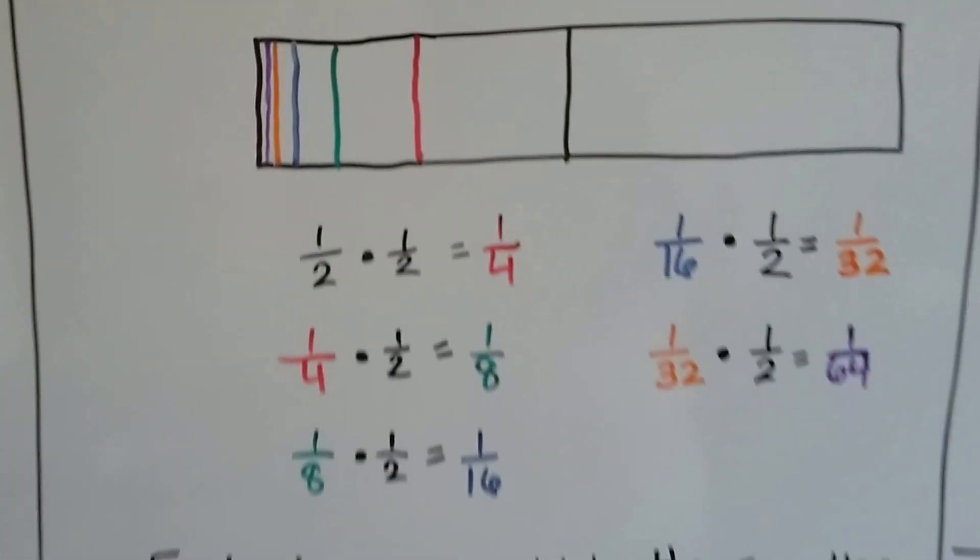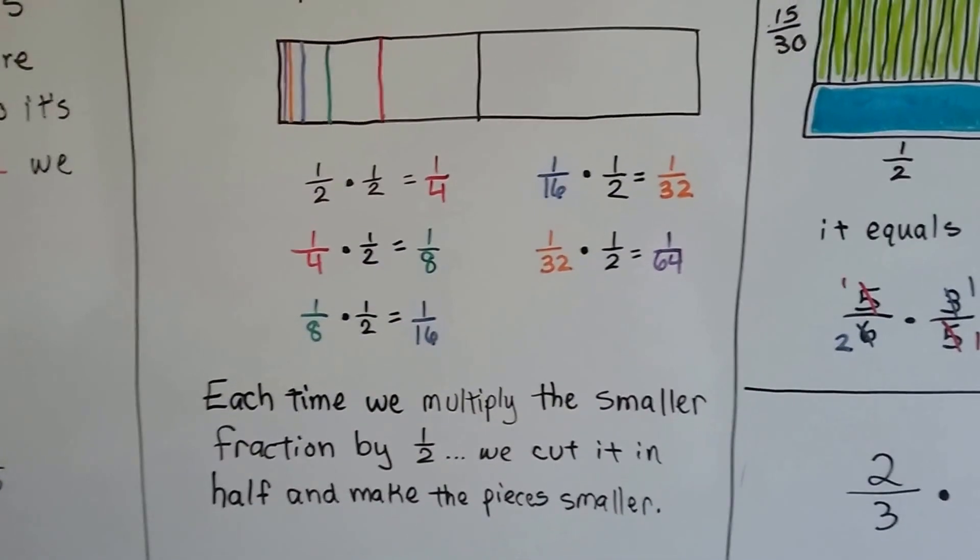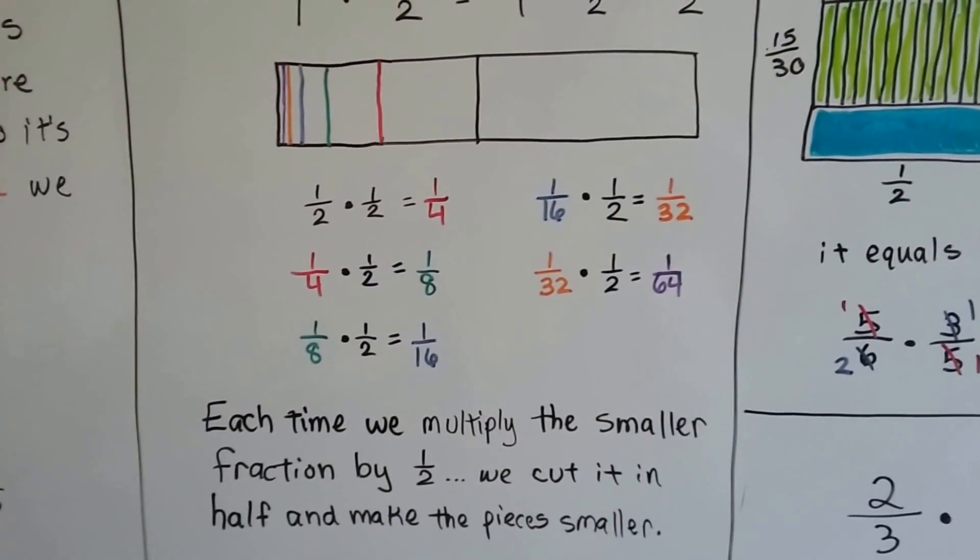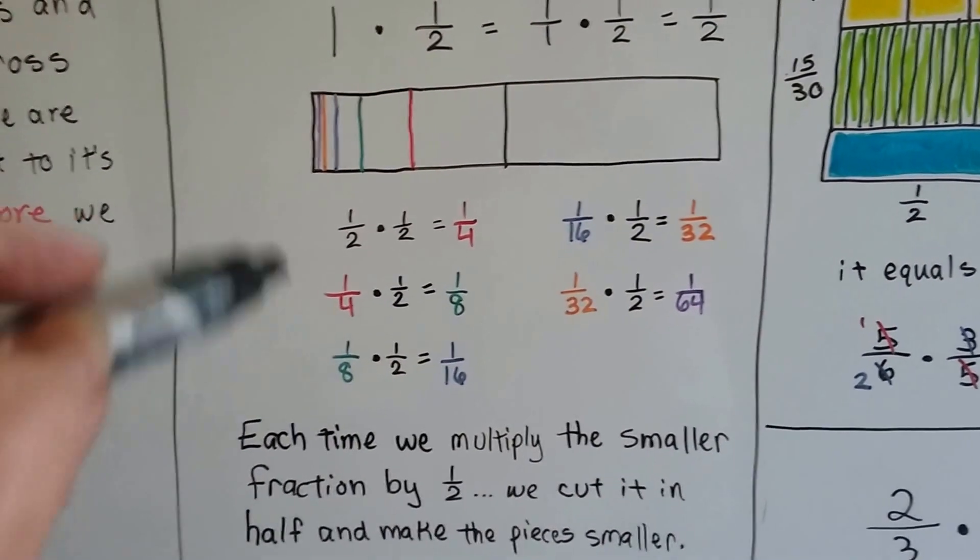So each time we multiply the smaller fraction by a half, we're cutting it in half and making the pieces even smaller. If we had been multiplying by a fourth or a sixth, we would have been cutting it into fourths and sixths.